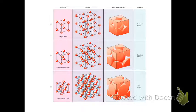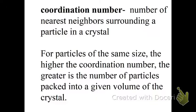There's three examples of polonium, uranium, and gold metal. Your coordination number is the number of nearest neighbors surrounding a particle in a crystal. So if you have particle size that's the same but a higher coordination number, that means there are more particles packed into that given volume of a crystal.